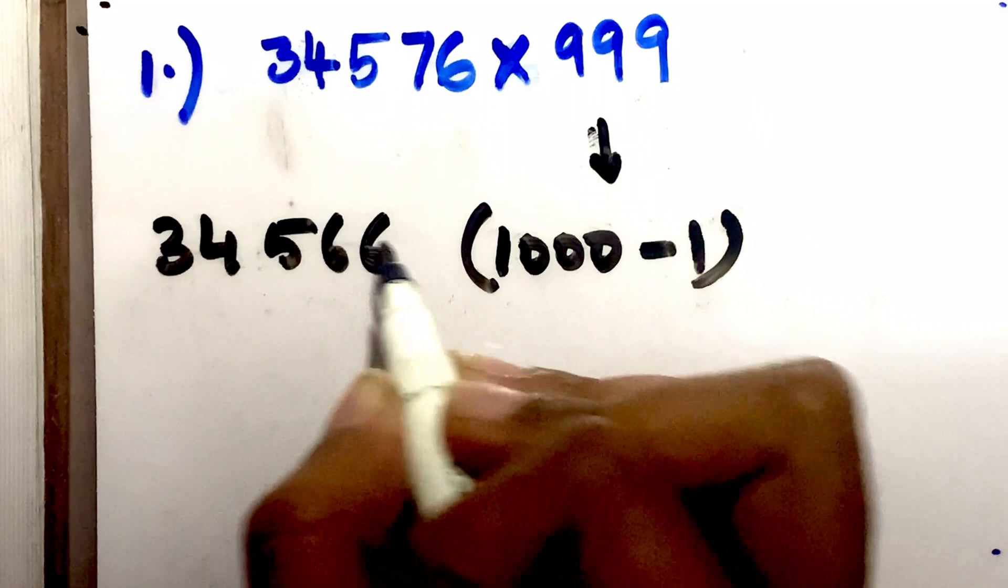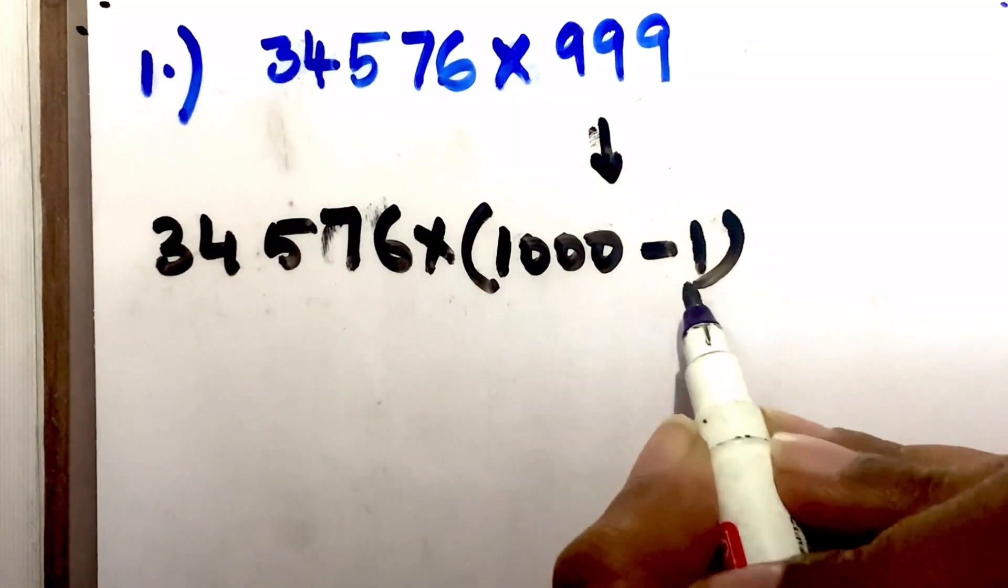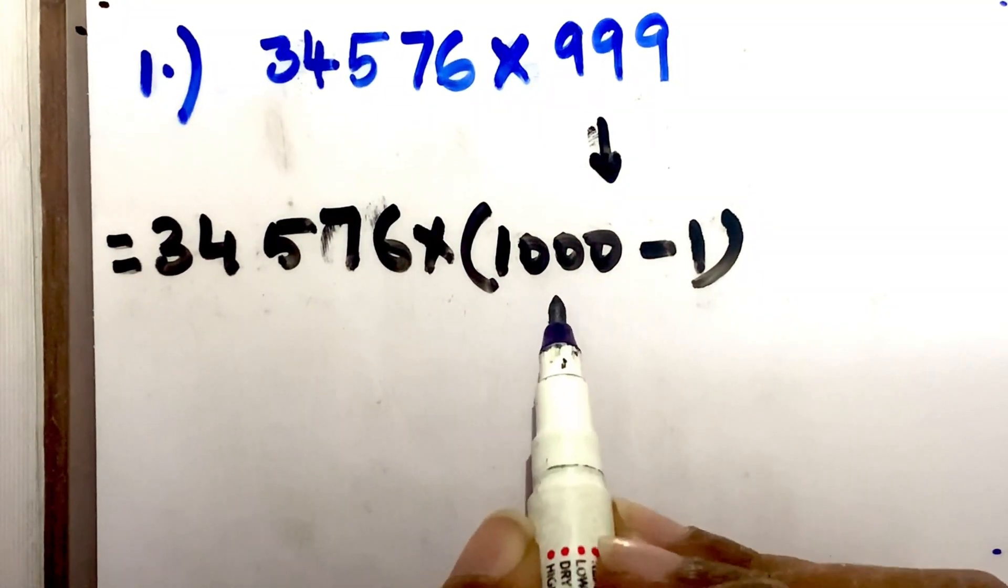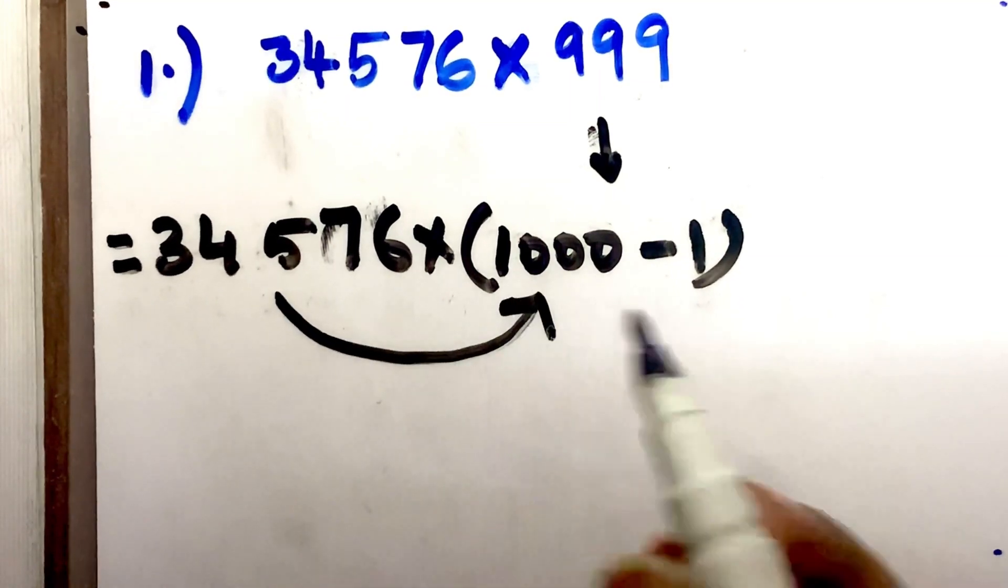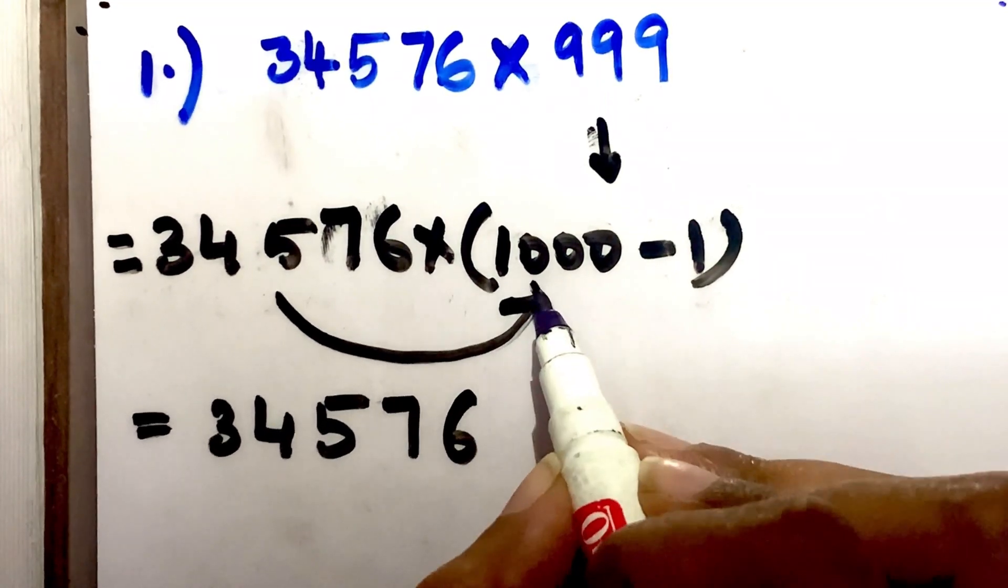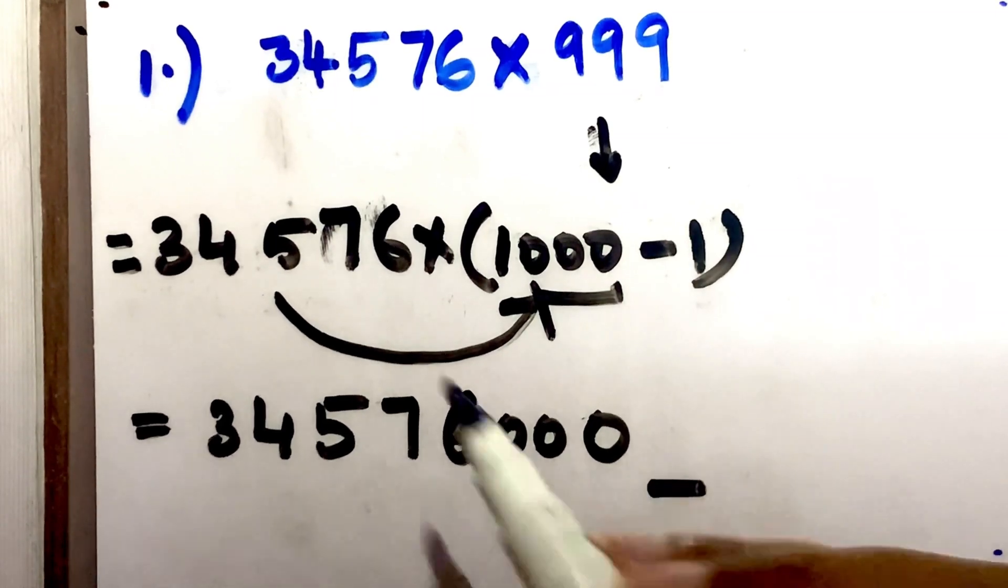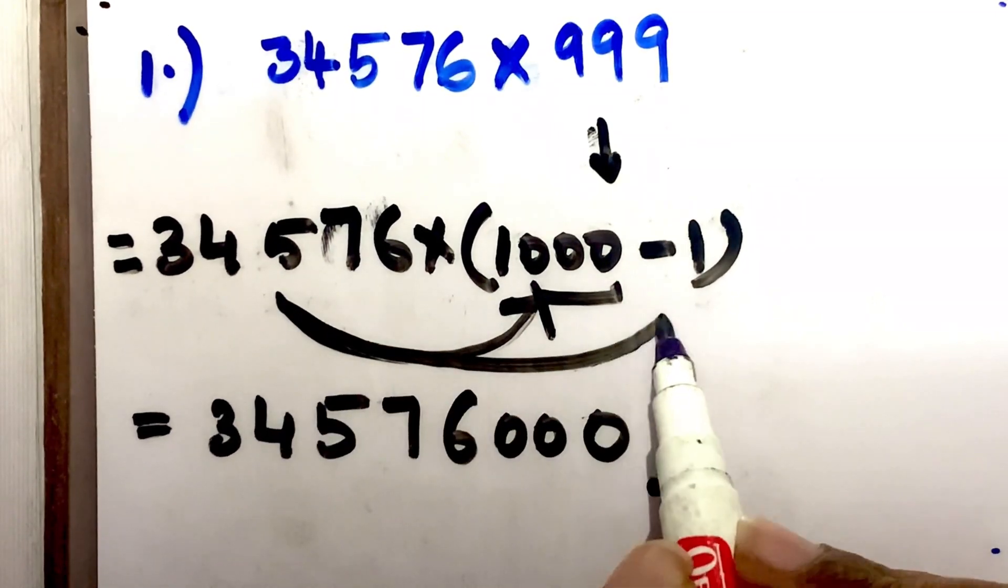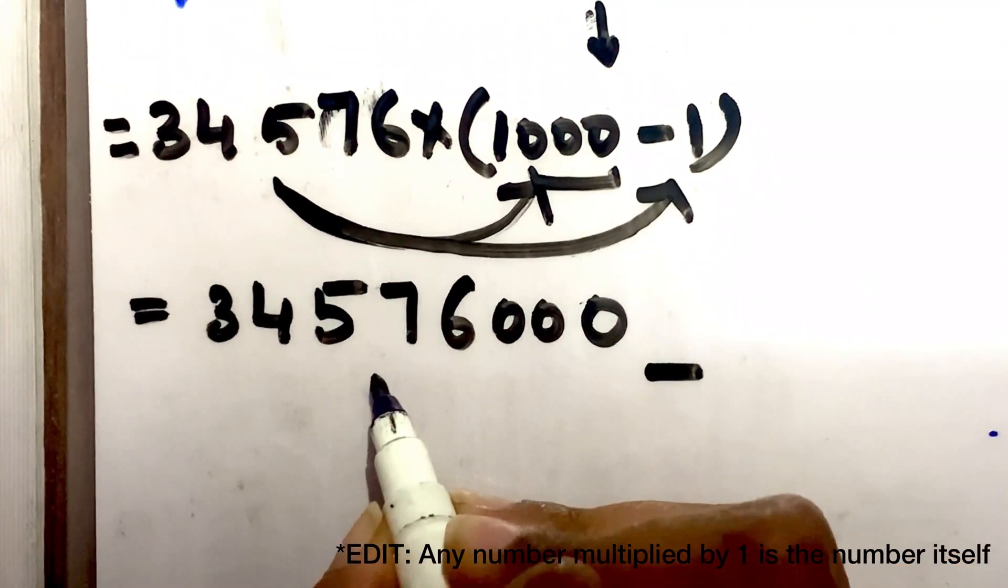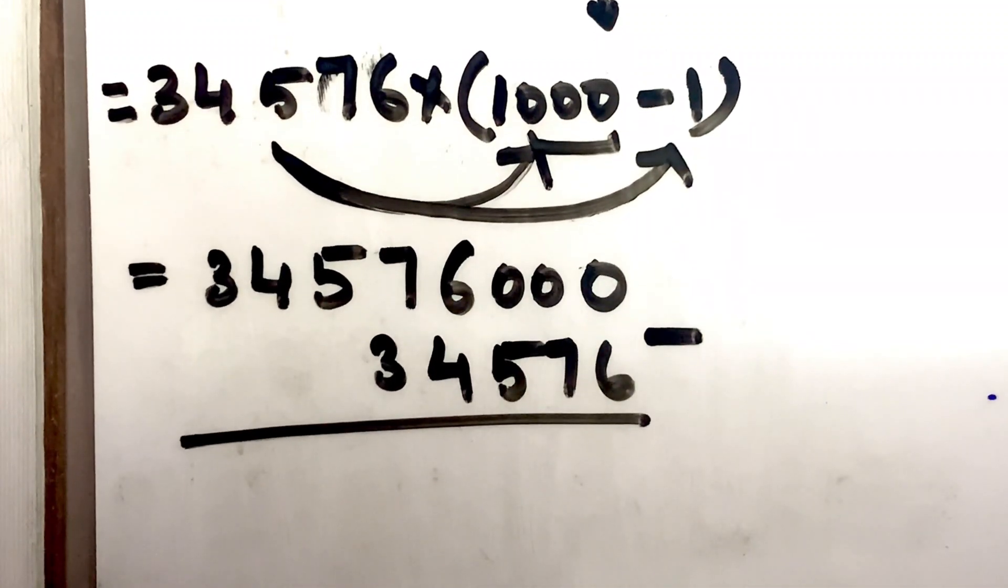So 34,576 into 1000 minus 1. This is equal to the statement. Now multiply, apply the distributive property. 34,576 into 1000 which equals 34,576 with 3 zeros there. So 1, 2, 3, minus sign there. Subtract 34,576 into 1. Any number multiplied by 1 is the number itself. So 34,576.